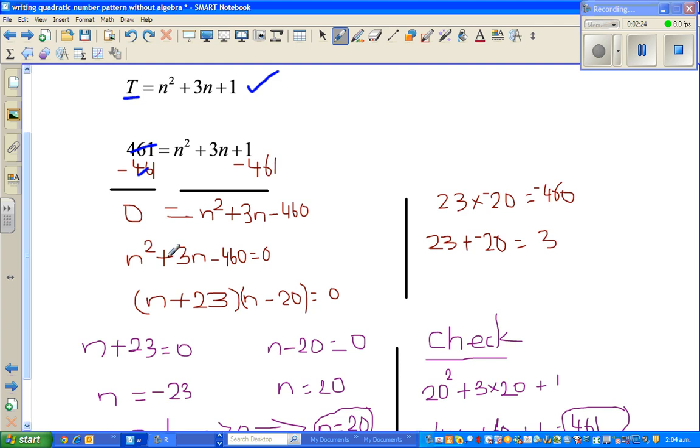So now this has become a quadratic equation. You have to figure out two factors of minus 460 which adds to give you 3. So I know 23 times negative 20 gives me negative 460.